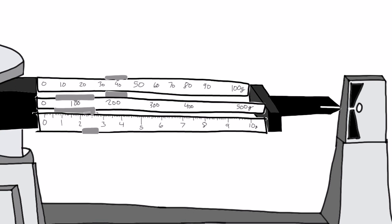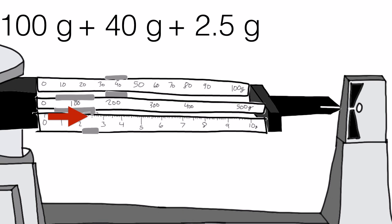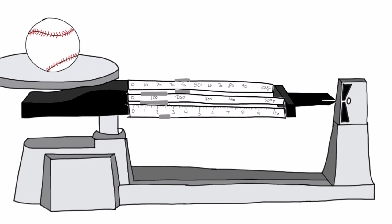To figure out the mass of the object, add all three sliders. 100, 40, and 2.5. The mass of our object is 142.5 grams.